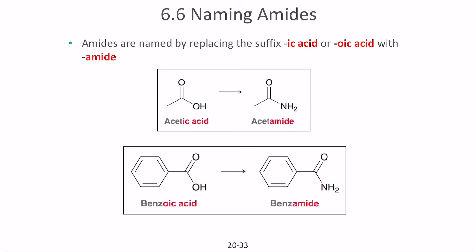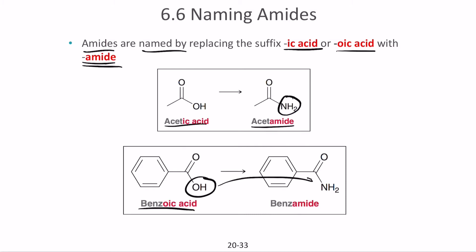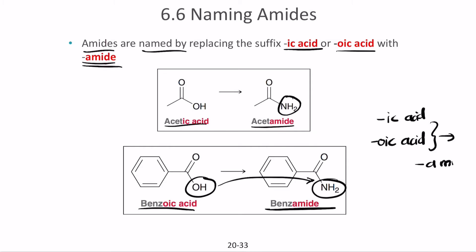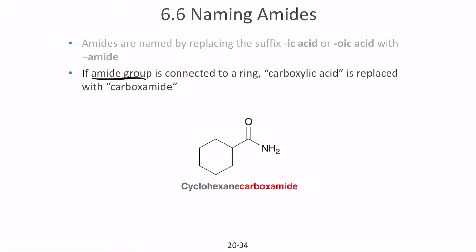Amides are named by replacing the suffix '-ic acid' or '-oic acid' with '-amide.' For example, acetic acid becomes acetamide when NH₂ is added; benzoic acid with NH₂ replacing OH becomes benzamide. If the amide group is attached to a ring carboxylic acid, we write it as 'carboxamide' — for example, cyclohexane carboxamide. Whenever you have a ring structure, just name it as 'carboxamide' and use the same prefix consistently.